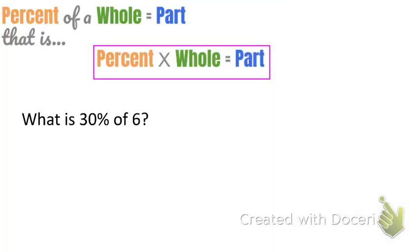First, this says what is 30% of 6? Obviously, 30% is the percent. Remember, percent of a whole is the part, so when you see the word of, the next number is the whole. We don't know the part, so we'll call that p. Now let's substitute these into the formula.